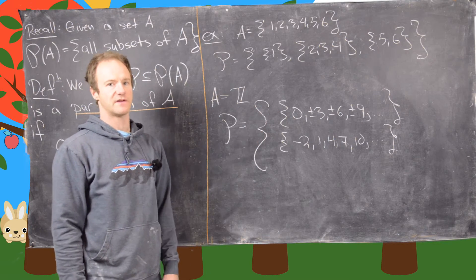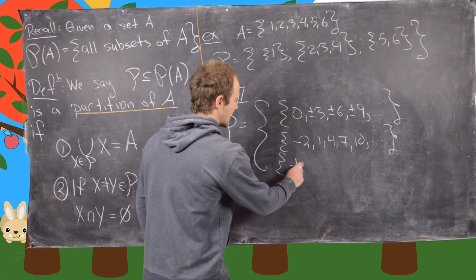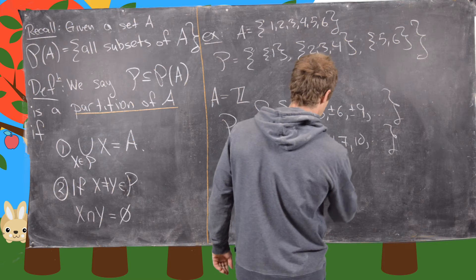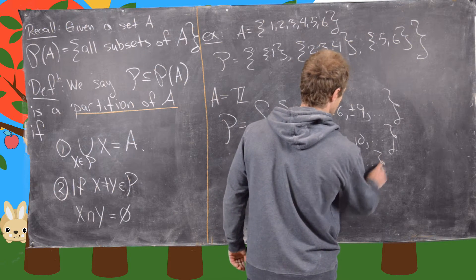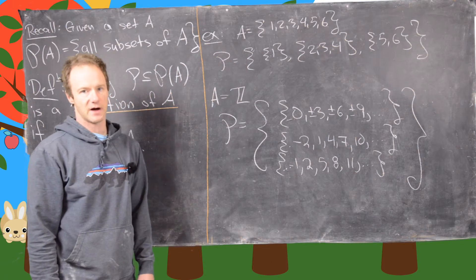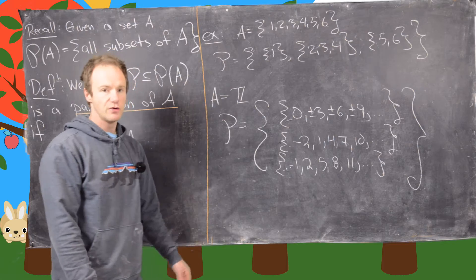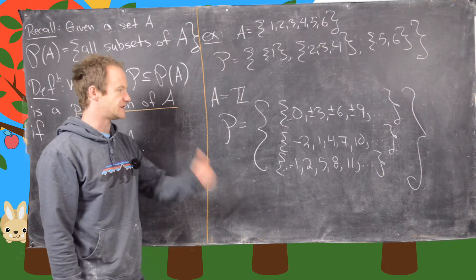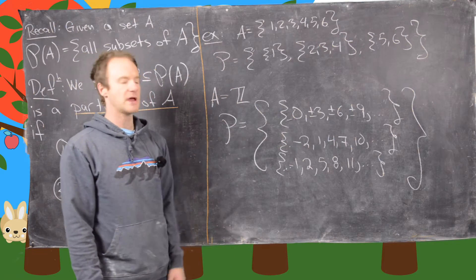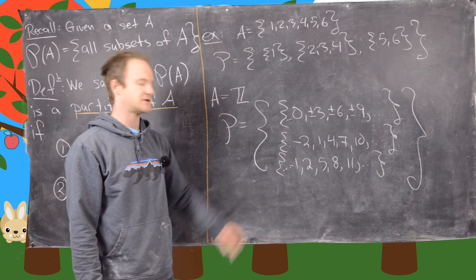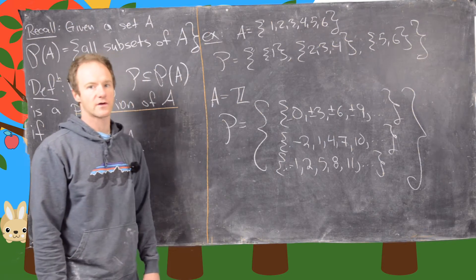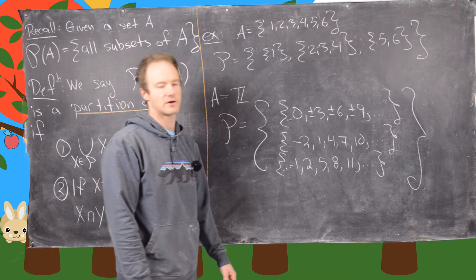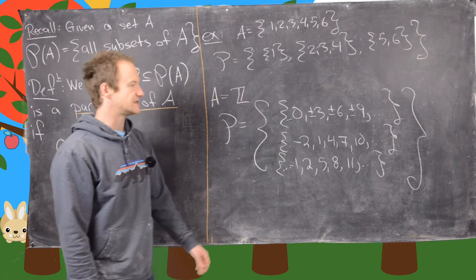And finally we'll have {..., -1, 2, 5, 8, 11, ...} — these all have a remainder of 2 when divided by 3. If we take the union of all of these, we get all of the integers, because when you divide any integer by 3 you get a remainder of 0, 1, or 2. And these subsets don't overlap because the remainder when dividing by 3 is unique — you can't have a remainder of 1 and a remainder of 2 simultaneously.